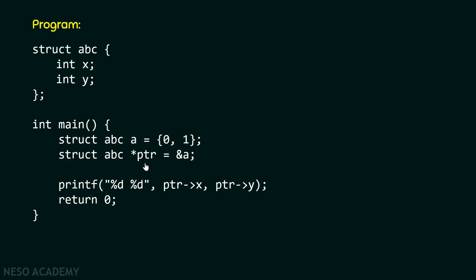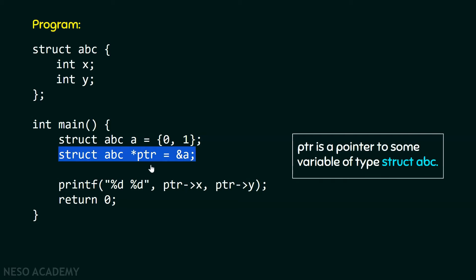After that, we have a pointer to a variable of type struct abc. This pointer contains the address of variable a. We can verify that variable a is of type struct abc, and this pointer is pointing to a variable of type struct abc, so it must contain the address of a variable of that type — and that is what it contains.